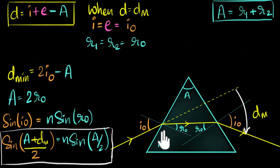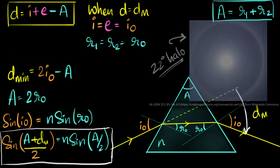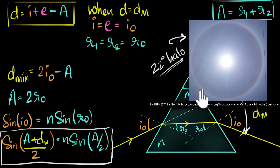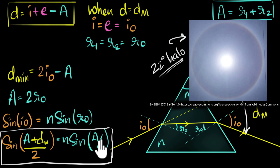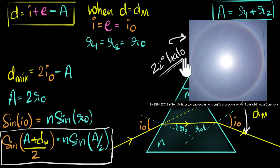To summarize: we wrote the angle of deviation in terms of the angle of incidence and emergence, then found that at minimum deviation the angle of incidence equals the angle of emergence, substituted, and used Snell's law to get the final expression. And one last thing: in a previous video, we saw the 22-degree halo around the sun is caused by suspended ice crystals acting like a prism. These prisms have a minimum deviation angle of 22 degrees. We know the refractive index of ice (essentially water) and that these crystals have an apex angle A of about 60 degrees. Plugging that in, the minimum deviation is roughly 22 degrees — and that's the whole reason we get a 22-degree halo.